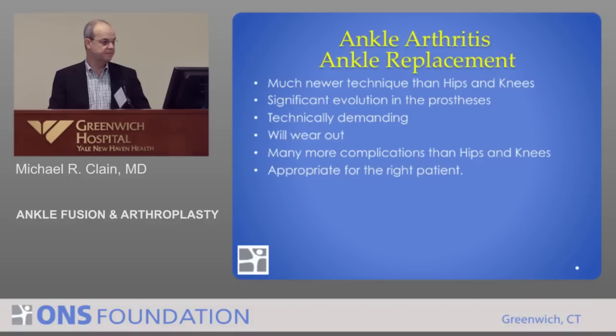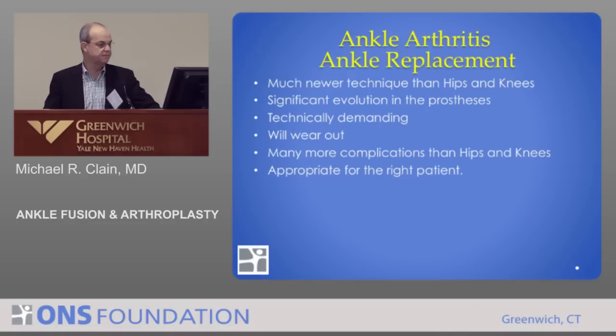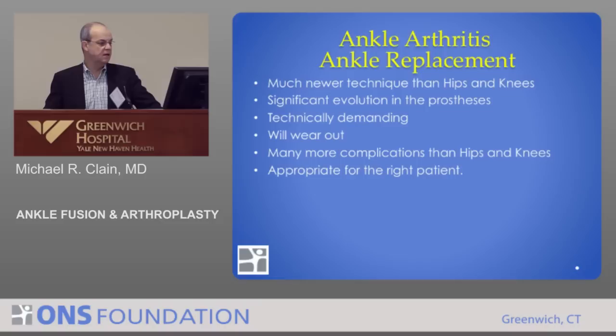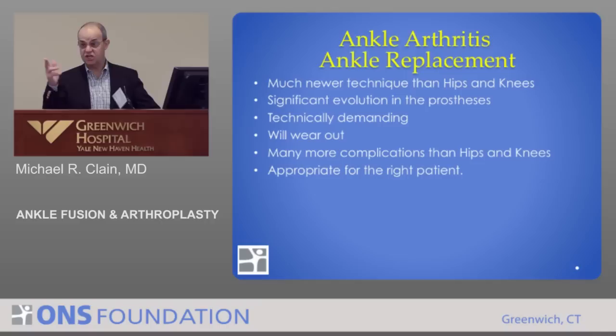Ankle replacements are a much newer technique than hips and knees. They were tried in the 70s with a lot of failures and abandoned, then there was a trend in the last 10–15 years to go back to them. There's been a huge evolution in the prostheses over the last 10 years. The initial U.S. prosthesis was abandoned — though not abandoned in Europe, where Europeans have contributed enormously. Any time you see things change a lot in joint replacements, watch out — hips and knees haven't changed much, which is a good thing. If you see radical changes, that tells you they haven't figured it out.